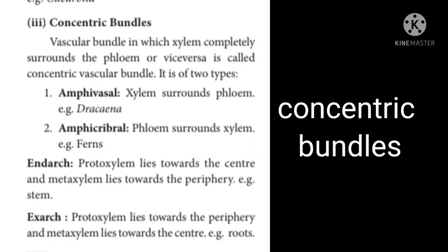Concentric bundles are the third type of vascular bundle. In concentric bundles, xylem completely surrounds the phloem, or vice versa.